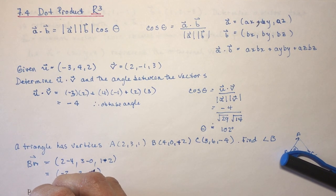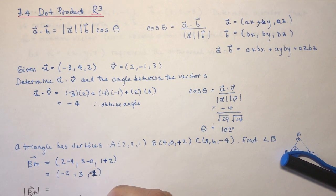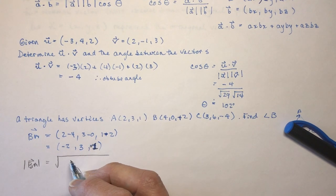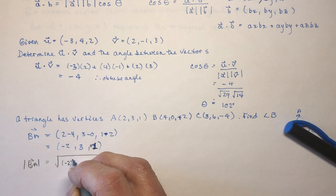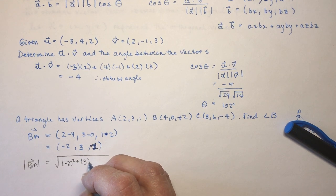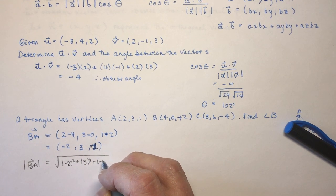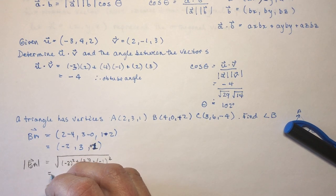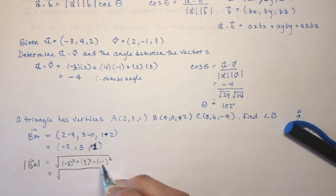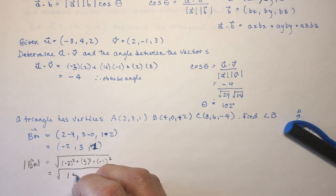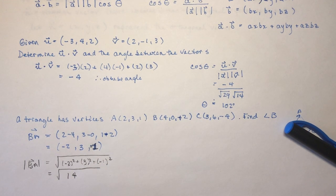Okay, so the magnitude of BA, I should have been doing this in pencil all along, that's why your teachers tell you to use pencils, because then you can erase and not make a mess like that. So I have minus 2 squared, plus 3 squared, plus minus 1 squared. So that's going to give me 4, 9 is 13, and 1 is 14. So I have the square root of 14 for the magnitude.